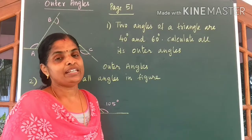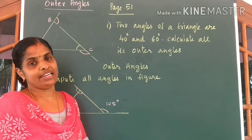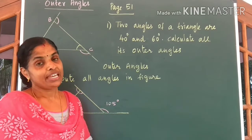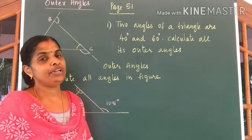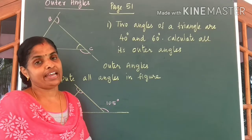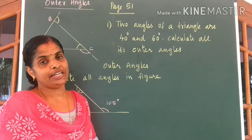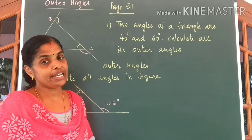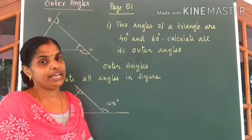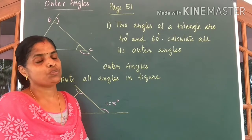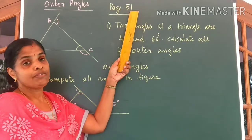Hi kids, welcome to the third part of polygons. In our previous class, we were talking about outer angles of a triangle, and we said the outer angle of a triangle is always 360 degrees. Today, let us work out problems in page number 51.